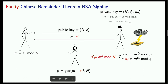To do this calculation, the eavesdropper needs to be able to both reconstruct the message and see the faulty signature. Conveniently, in TLS versions 1.2 and below, both of these conditions are met: the signature is sent in the clear, and if PKCS 1.5 padding is used, the message can be reconstructed from data that she can observe.